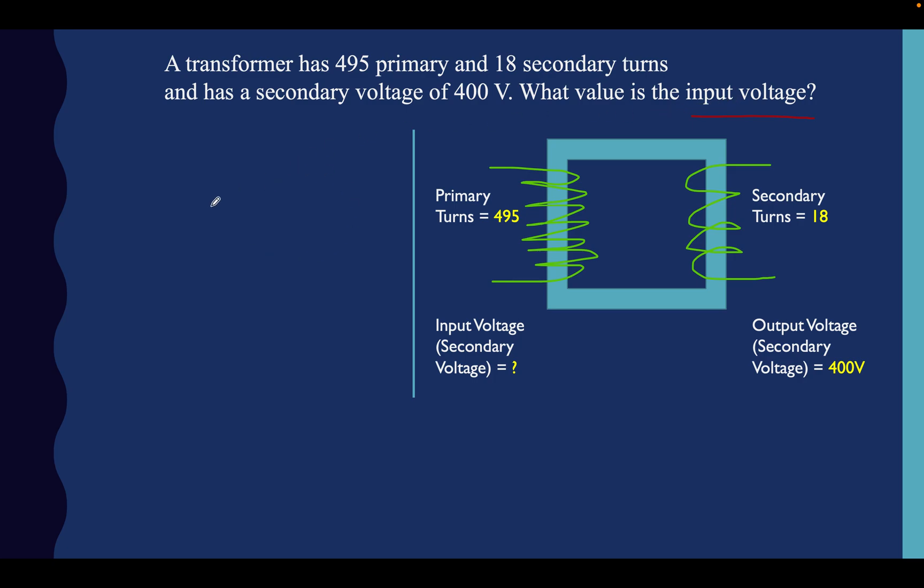So we'll go over here and we'll do this in the left hand side in a minute. But let's analyze this first. So transformer, that's this thing. 495 primary turns, that's this bit here. And 18 secondary turns. So we could calculate the ratio between that. We'll do that afterwards. And there's a secondary voltage of 400 volts. So we know the output voltage. We know the secondary and primary turns. We're being asked for the input voltage.